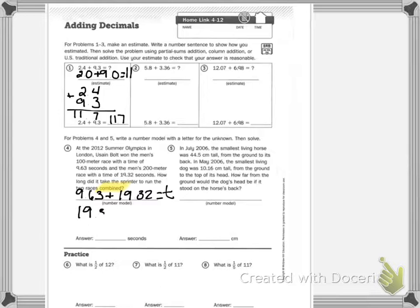19.32 plus 9.63 equals—2 plus 3 is 5, 6 plus 3 is 9, my decimal point. 9 plus 9 is 18, I carry my 1, 1 plus 1 is 2. My answer is 28.95 seconds.